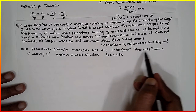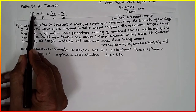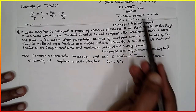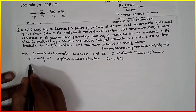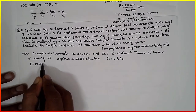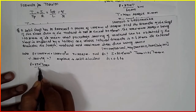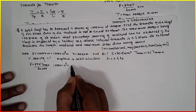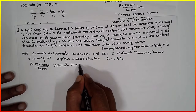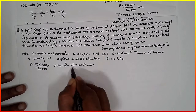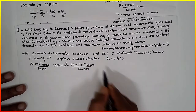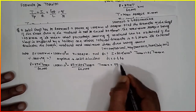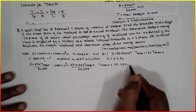T_max is given as 1.25 T_mean, so we first find T_mean using power. The formula is: P = 2π × N × T_mean / 60,000. Substituting: 1000 × 10³ = 2π × 120 × T_mean / 60,000. Solving, T_mean = 79.57 × 10⁶ N·mm.